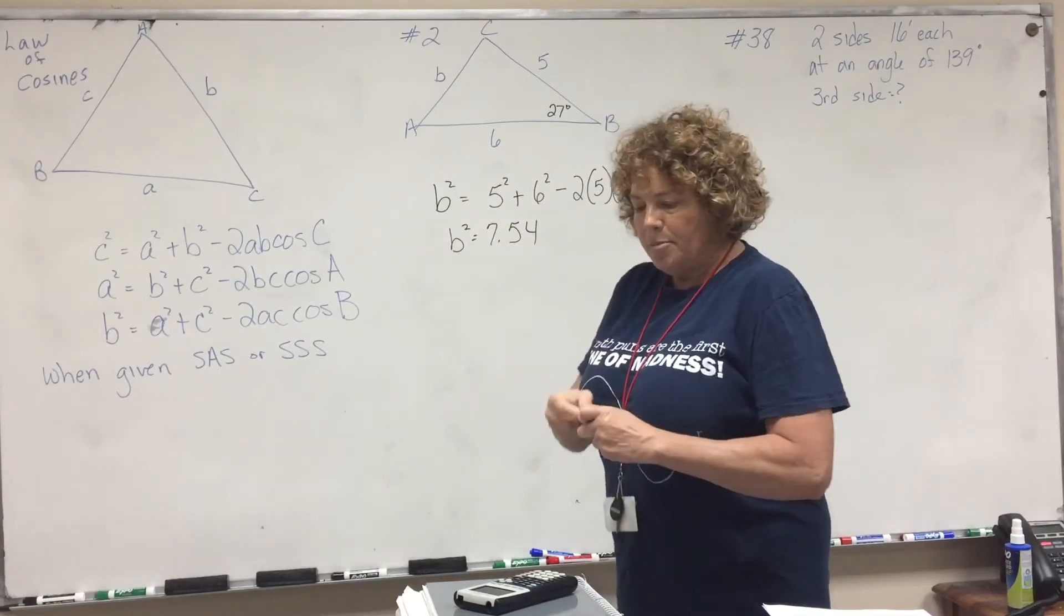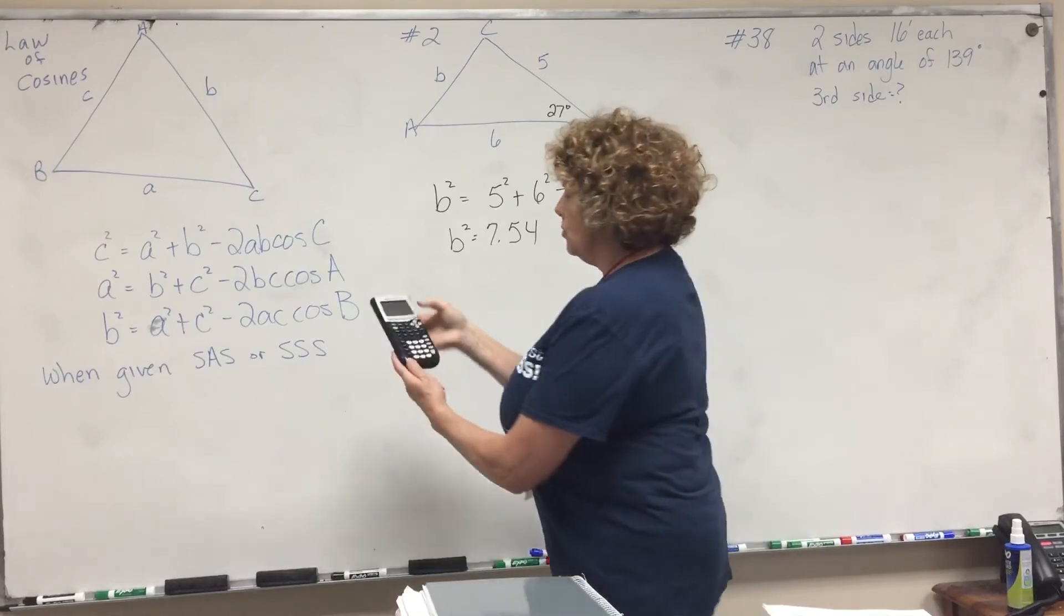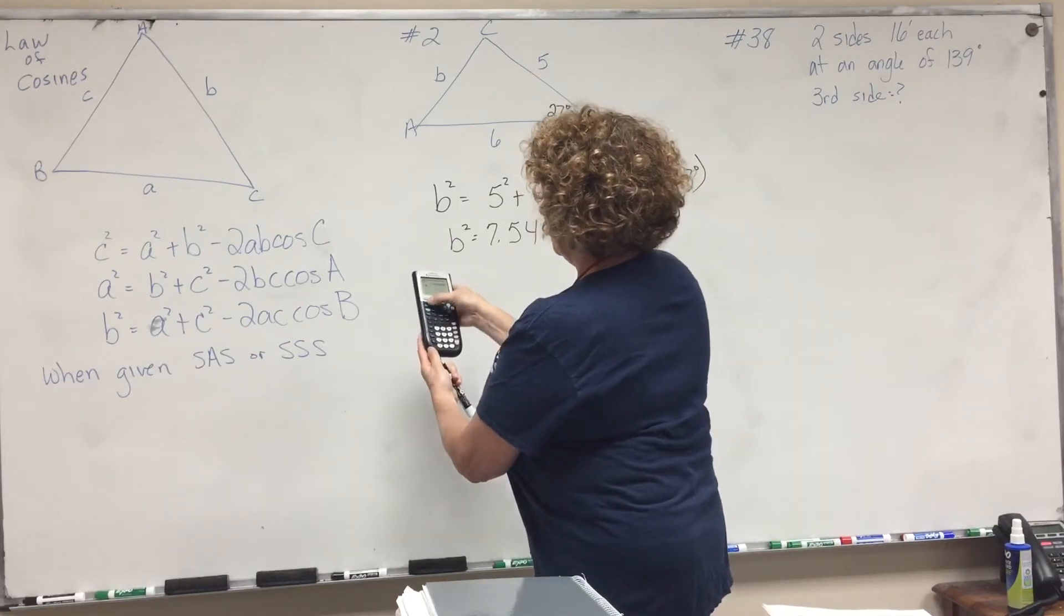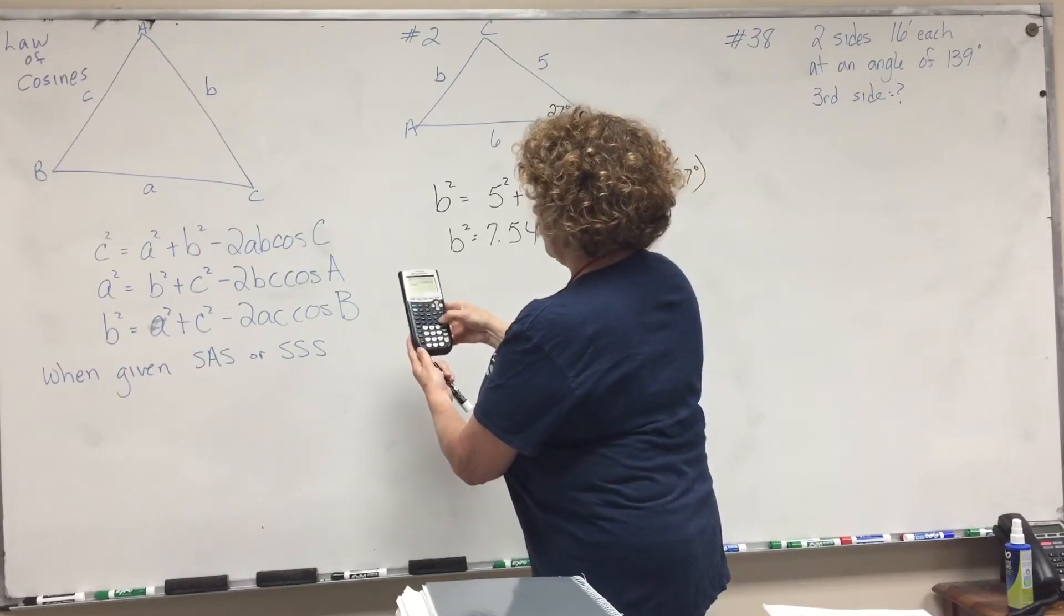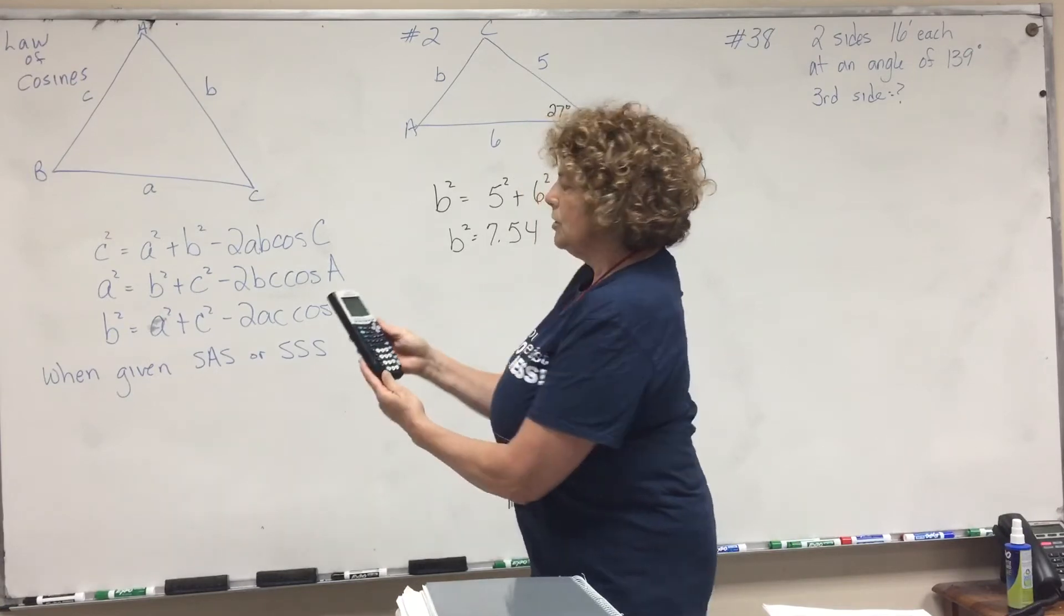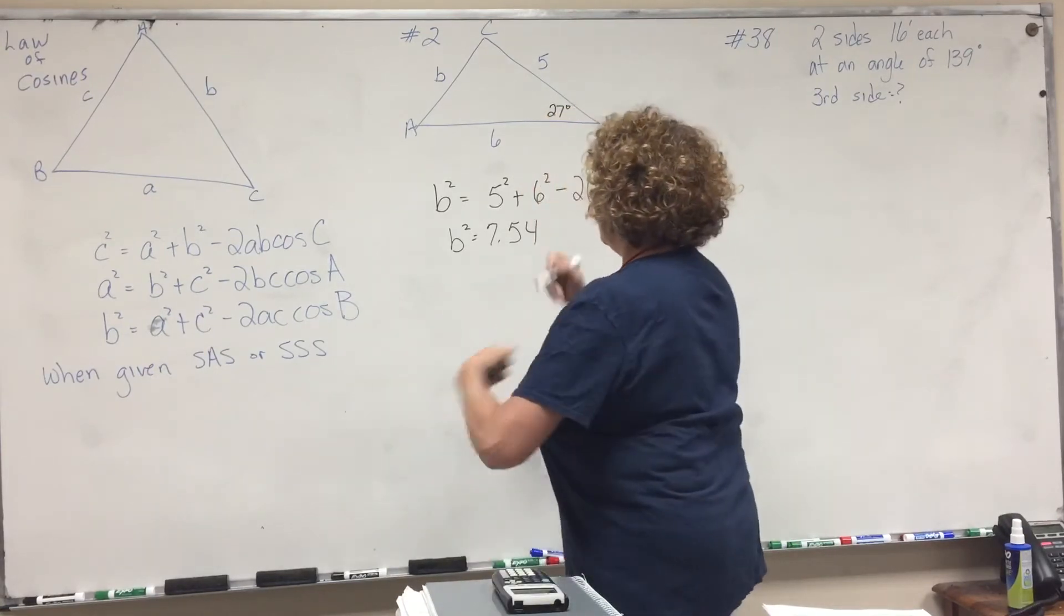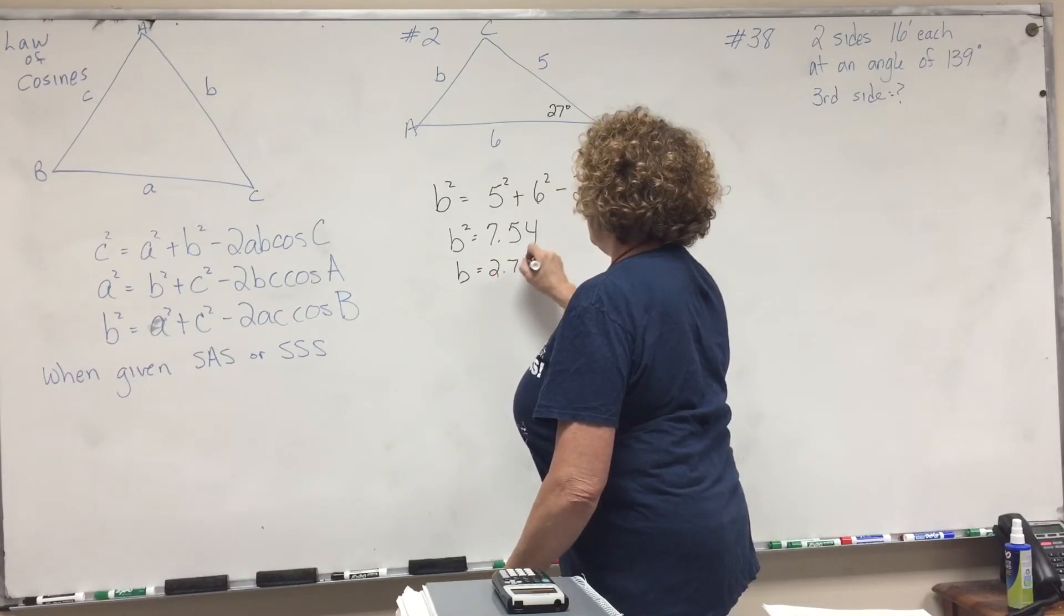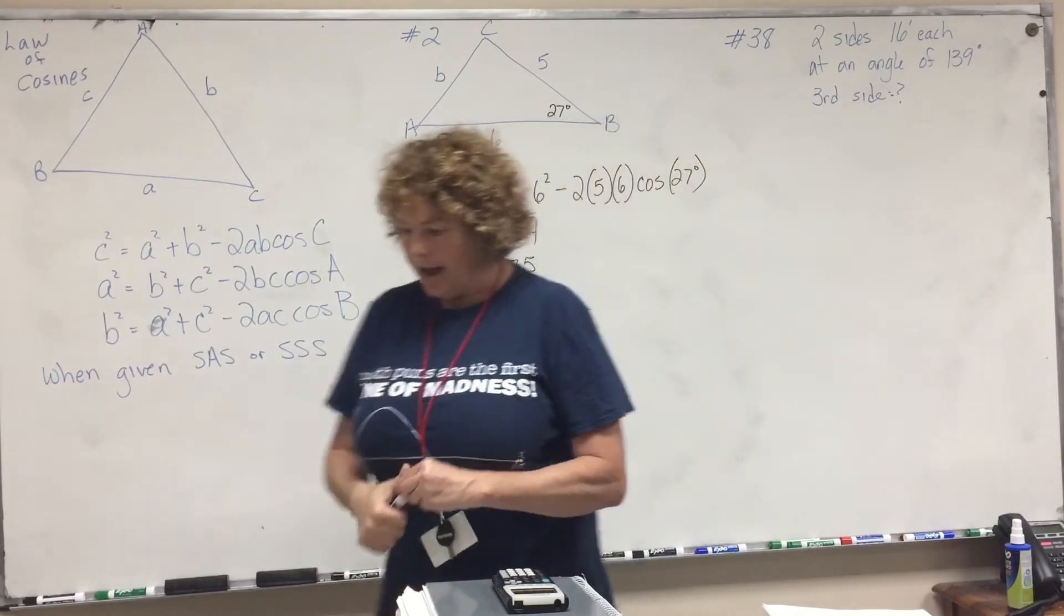So how do we get b? You just do second square root, second answer, if you've got your answer still in there. So it's 2.75. So b equals 2.75.